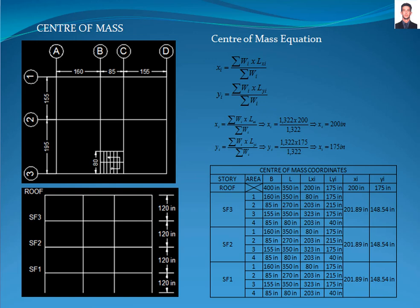For example, for roof story, the center of gravity of a square is at the half distance of both orthogonal directions. In this building, it is in x direction 200 inches and in y direction 175 inches.